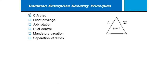Then we have the I — integrity. Integrity means we want assurances that data hasn't been maliciously or accidentally changed. Do we have checks and balances? If I'm transmitting information across a network, confidentiality often means encryption, and then we'd have some sort of hashing function to verify that the data wasn't altered in transit.